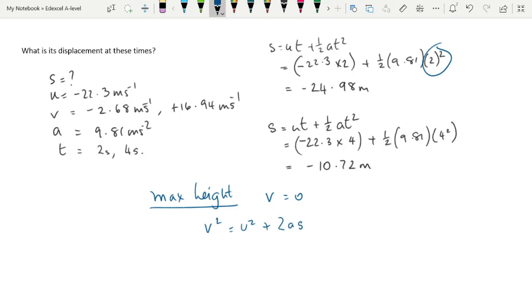we can say 0 equals minus 22.3 squared plus 2 times 9.81 times s. Solving for s gives us minus 25.35 meters.